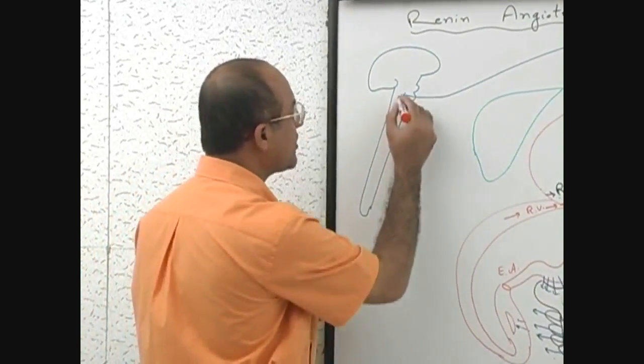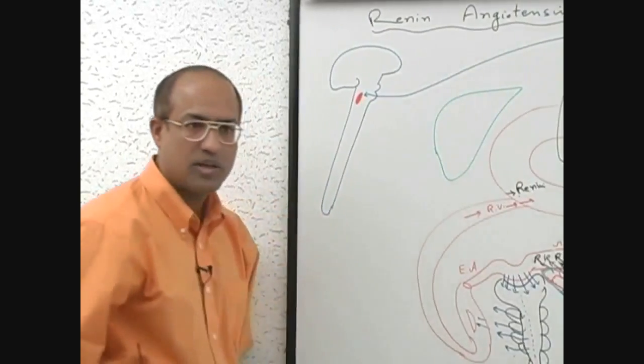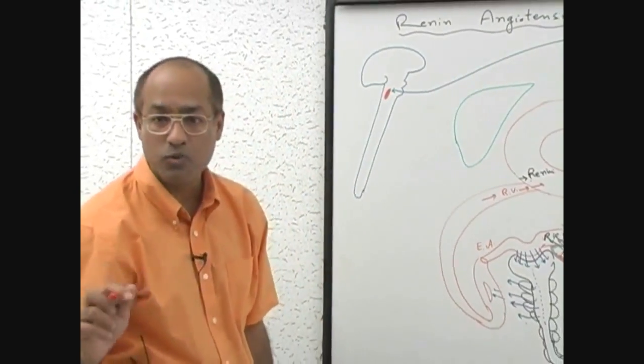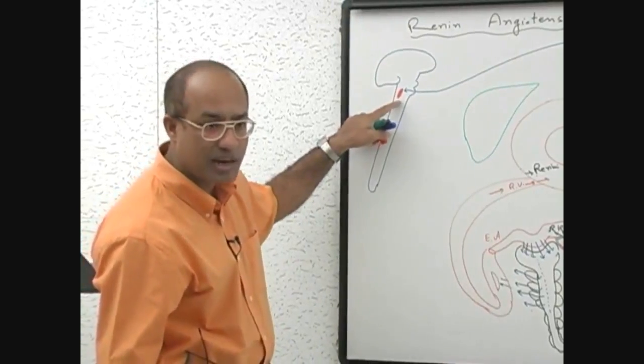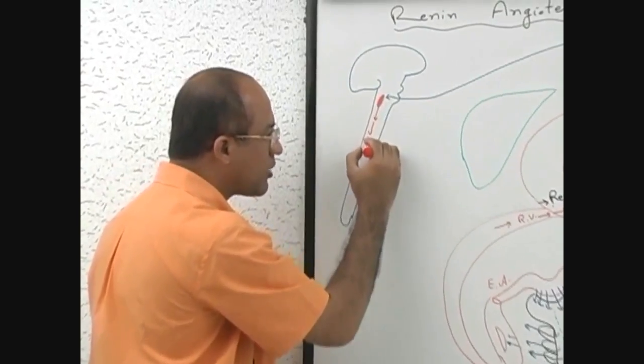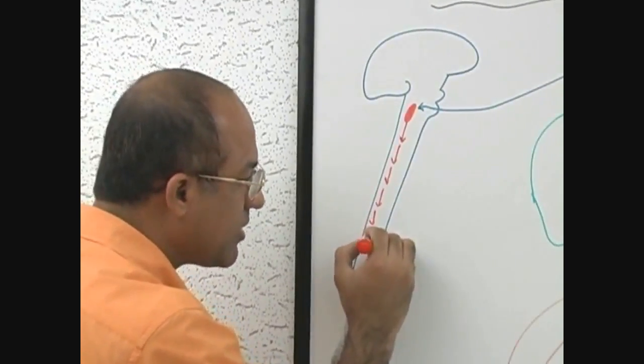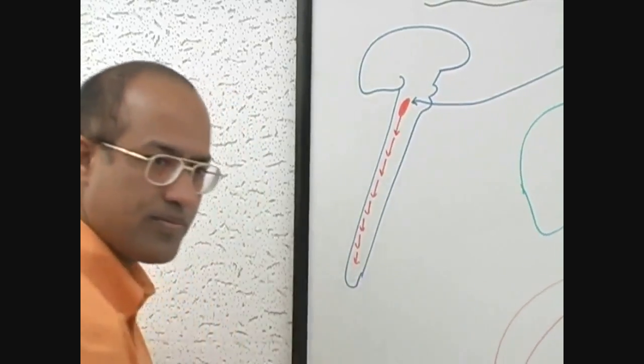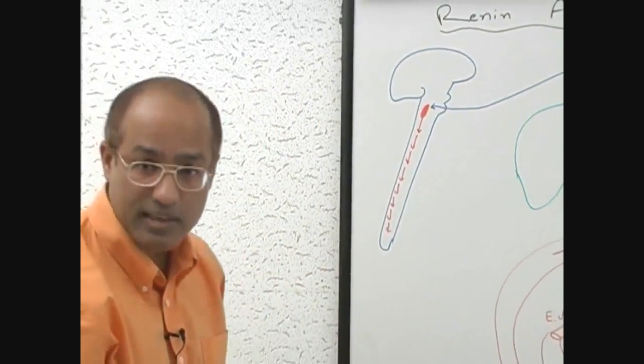As soon as the central nervous system senses that blood pressure is going down, it will stimulate the sympathetic outflow through the vasomotor center in the medulla. From the medulla, fibers will come down, neuronal connections will come down and stimulate sympathetic outflow.